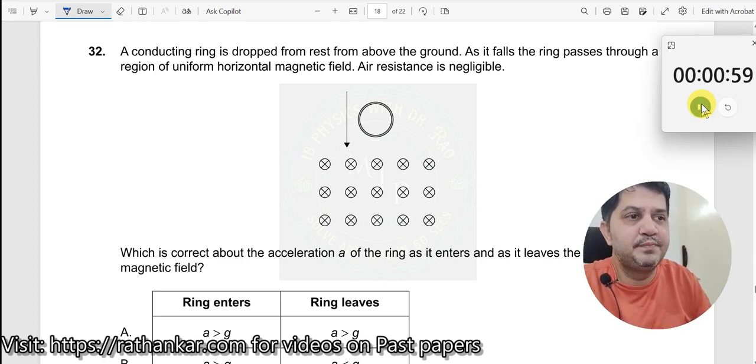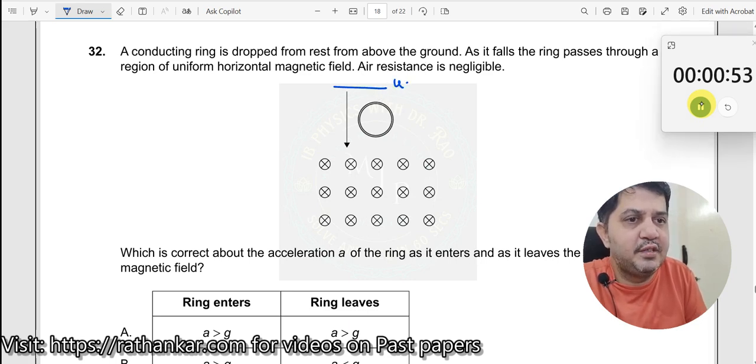Question number 32: A conducting ring is dropped from rest from above the ground. It is dropped from rest, u equal to 0, above the ground and the ring falls through a region of uniform horizontal magnetic field.